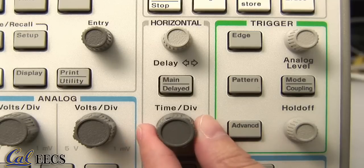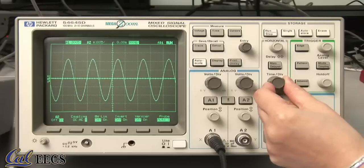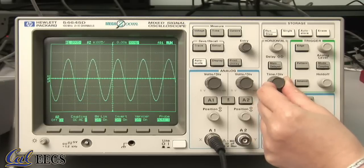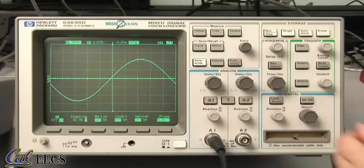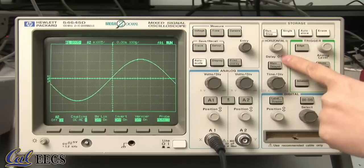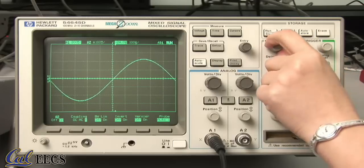The next feature we will explore is the horizontal functionality. The time per div knob allows you to adjust the horizontal scale on the scope, essentially allowing you to zoom in and out of a waveform. You can also move the waveform left or right using the delay knob.